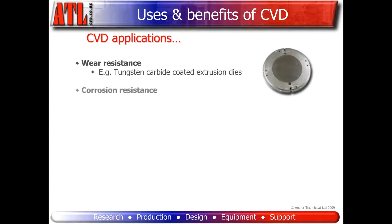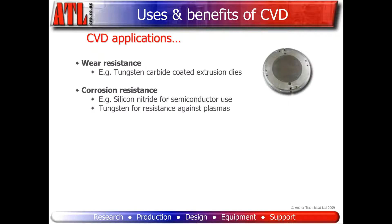Corrosion resistance, preventing the component from corroding. For example, silicon nitride in contact with liquid silicon and other high temperature applications can be used for encapsulating semiconductor processing materials to prevent damage from corrosion. Tungsten can be used to prevent erosion by plasmas and ion beams.